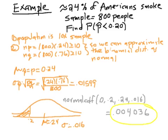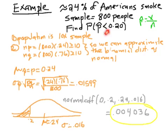Here's another complete worked-out example. Now some of this should make more sense than it did on the second slide. 24% of all Americans smoke, roughly. This number is a p — it's a parameter, the population proportion. You take a sample of 800 people, so this is our n. In those 800 people you can calculate a value for p-hat using the idea of number of smokers x over n. We want to figure out what's the probability that that particular sample proportion p-hat is less than 20%.